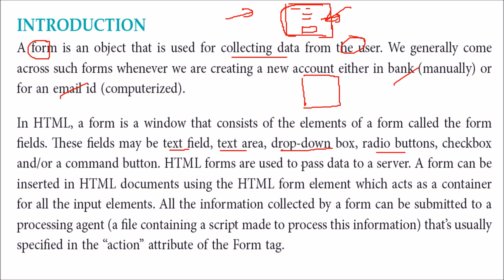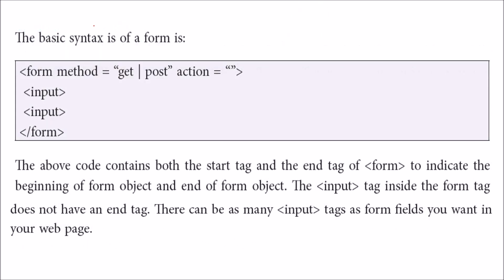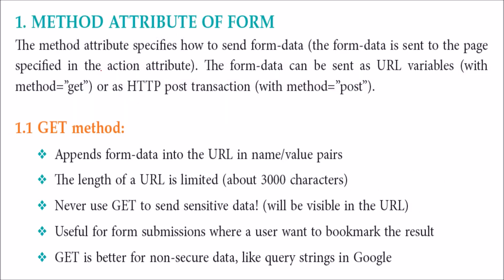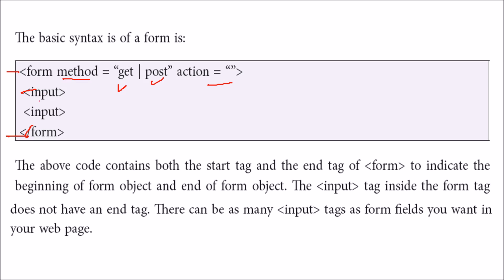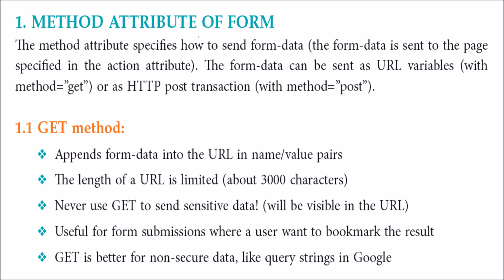HTML forms are used to pass data from the user to the server. The basic syntax of a form includes a start and a terminating end tag. The method attribute must be predefined — it can be either GET or POST, which we will discuss shortly. The action attribute defines what happens when you click the submit button. One important thing to highlight: the input element has no terminating tag — there is no forward slash for input.